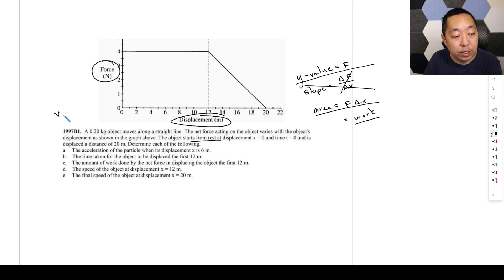The object starts from rest, so the initial velocity is zero. The displacement x equals zero at time t equals zero and is displaced at 20 meters. Part a: the acceleration of the particle when the displacement is six meters. We know the work and we know the y value. Which one of these is going to help with the acceleration is actually the y value. We just use F_net equals ma because this is a graph of F_net. The y variable is four. The mass is 0.2 times the acceleration. So the acceleration is four divided by 0.2, which is 20 meters per second squared.